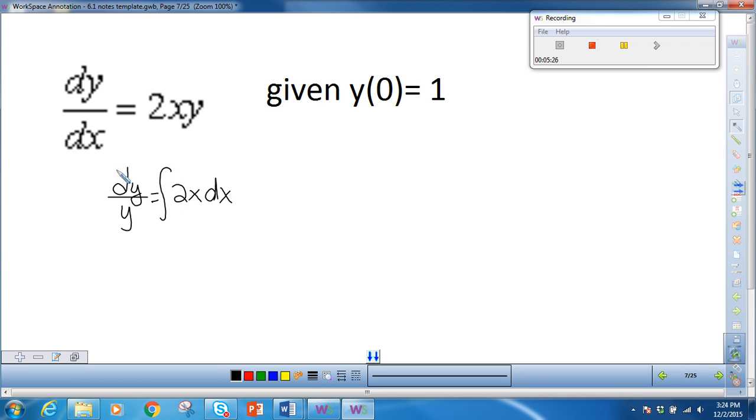Once my variables are separated, I take the integral of both sides. The integral of dy over y is the natural log of y plus c. But remember, I'm only going to do the c on this side. So I get x squared over 2. Those 2's cancel, so I just get x squared plus c.